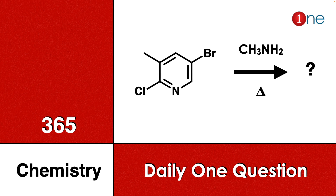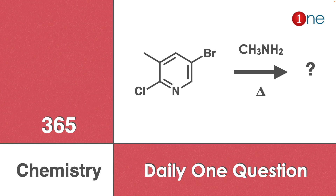Welcome to One Chemistry. This is the 365 Chemistry Series — one daily question for you. Here, pyrimidine has chlorine at the second position and bromine at the fifth position. You are reacting it with methylamine and heating it up. You have to find the final product.